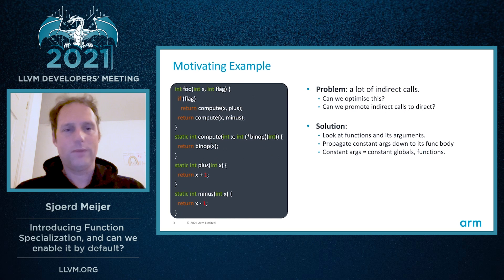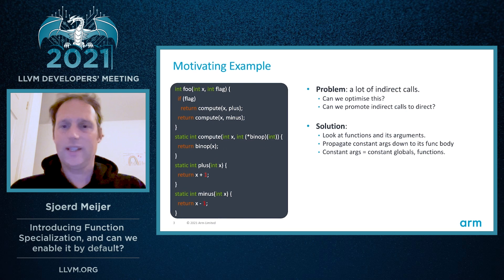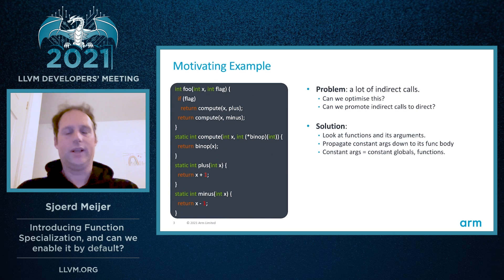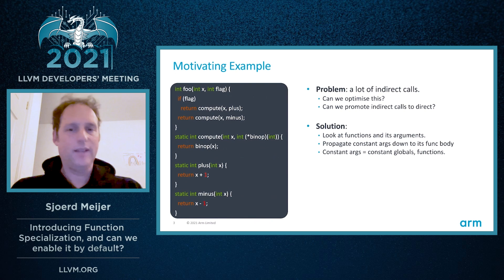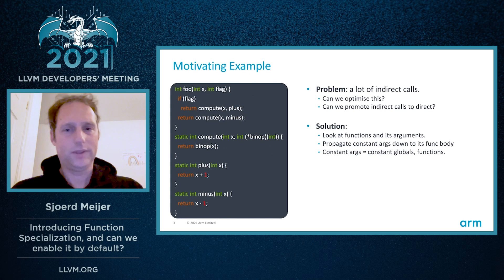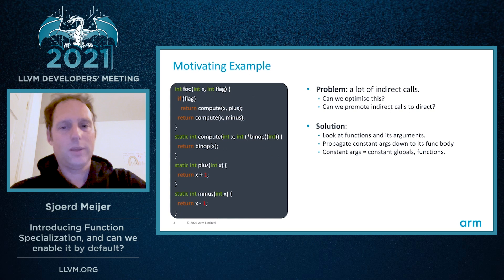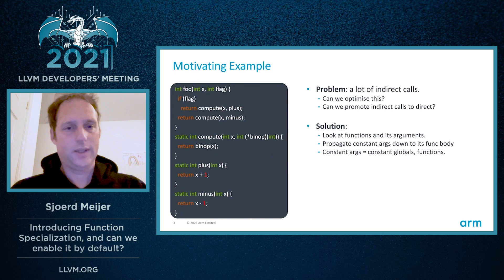Looking at this again, we see quite a lot of function calls: foo calls compute, which calls plus or minus. The observation is that there are quite a lot of indirect calls going on, and the question is, can we optimize this? Can we promote indirect calls to direct calls? Yes, we can. The solution is function specialization. The approach is that we look at function compute and its arguments, and propagate constant arguments down to its function body — constant arguments in this case being constant globals or functions, i.e., the plus or minus function.